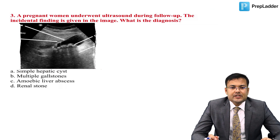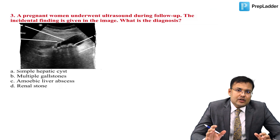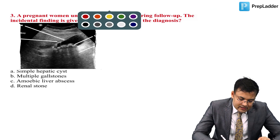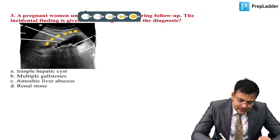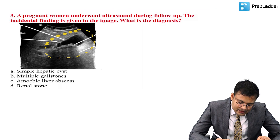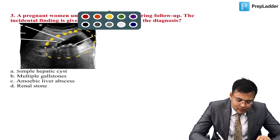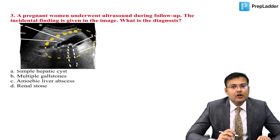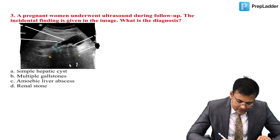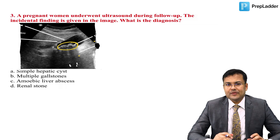Next question: a pregnant woman underwent ultrasound during follow-up. The incidental finding shown in the image involves the gallbladder. In the gallbladder content, multiple stones are visible with posterior acoustic shadowing. On ultrasound, gallstones show posterior acoustic shadowing, while a simple hepatic cyst shows posterior acoustic enhancement.